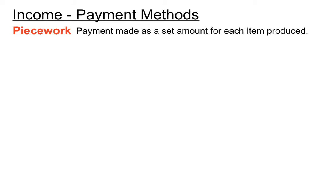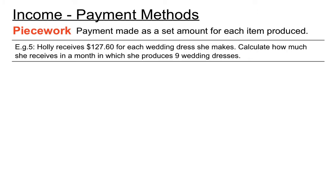Piecework: payment is made as a set amount for each item produced. For example, a person who makes a wedding dress — sometimes in the fashion industry you get paid for how many items you make. Holly receives $127.60 for each wedding dress she makes. Let's calculate how much she receives in a month in which she produces 9 wedding dresses, since she gets paid per wedding dress from the wedding shop.